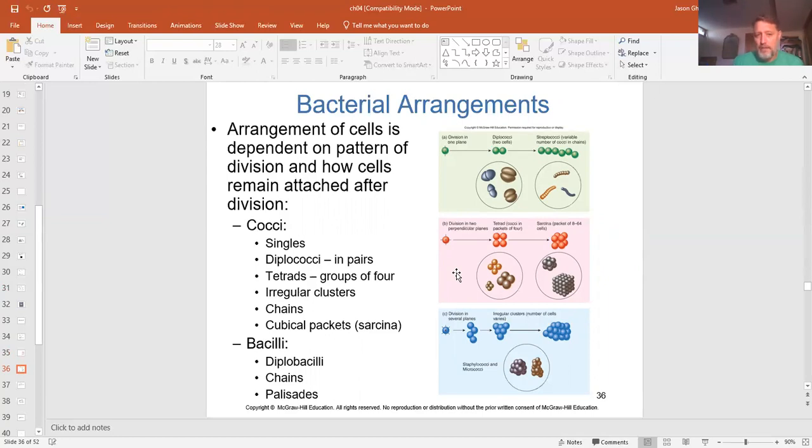So with the cocci, because they're round, they have more varieties. They can be singles, they can be pairs, they can be tetrads, which are groups of four. They can be in clusters, which we call staphylo. They can be in chains, which we call strep. Or they can be in cubes that we call sarcina. Now, if it's a cube of four and we're looking at it through a microscope, a microscope is a 2D view. So it'll look like a tetrad.